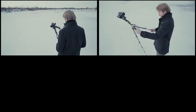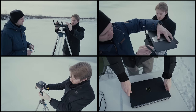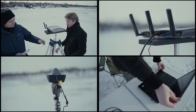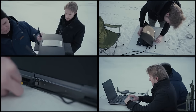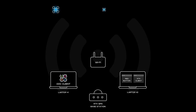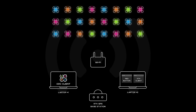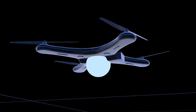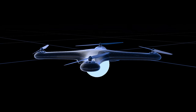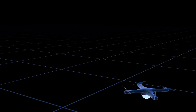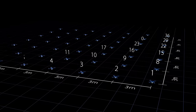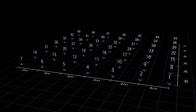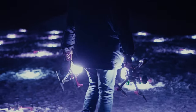The next step is logistics — defining where and when the show will be set. The field must be large enough to accommodate all the drones ready for takeoff. Important preparations include setting up the real-time kinematic GPS base station, a Wi-Fi router for connecting to drones, and the main control laptop. The distance between drones on the ground is usually between two and a half to three meters — so for 49 drones you need a 324 square meter field.